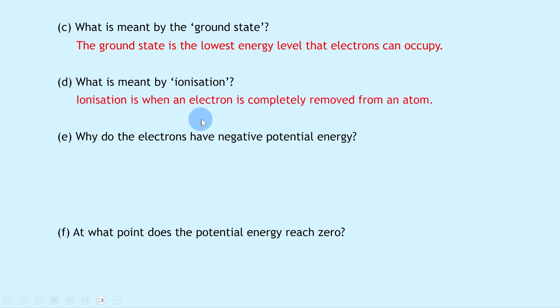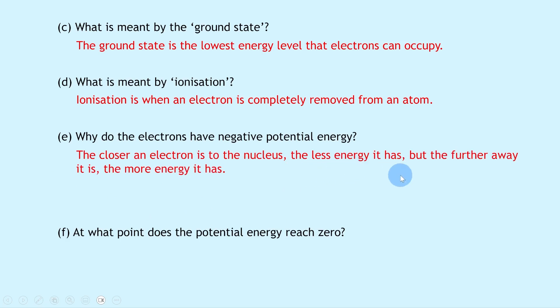We say that ionization is when an electron is completely removed from an atom. Part E says why do the electrons have negative potential energy? We can say the closer an electron is to the nucleus, the less energy it has, but the further away it is, the more energy it has.